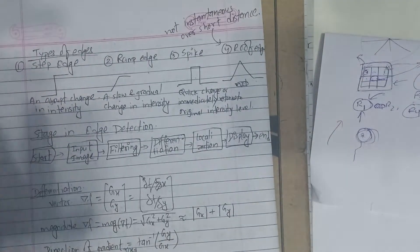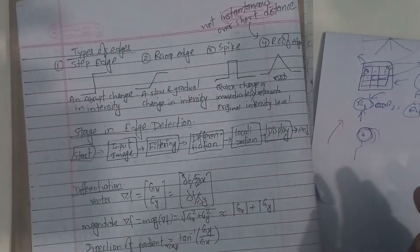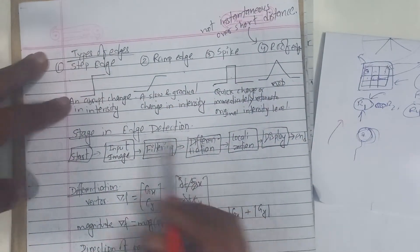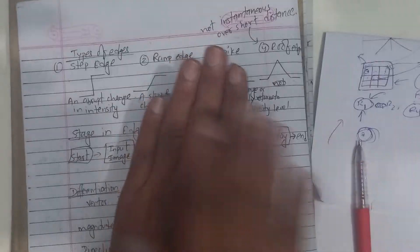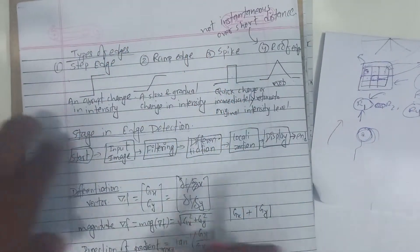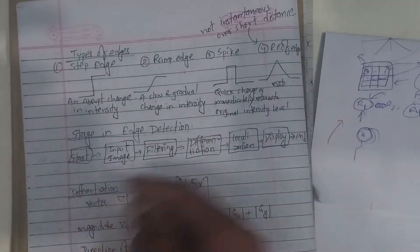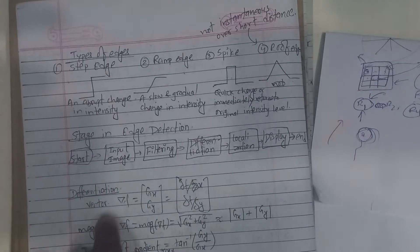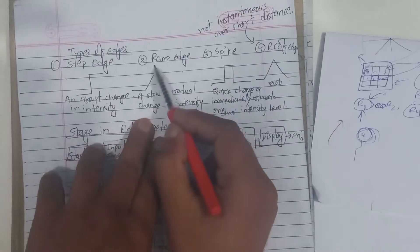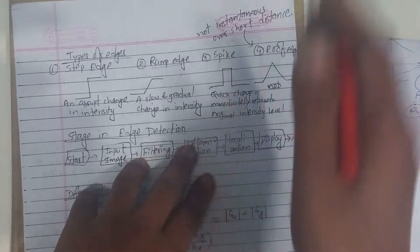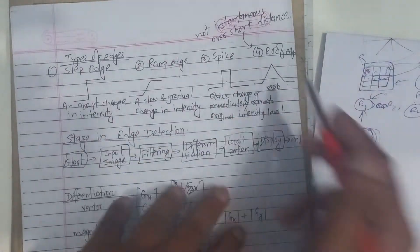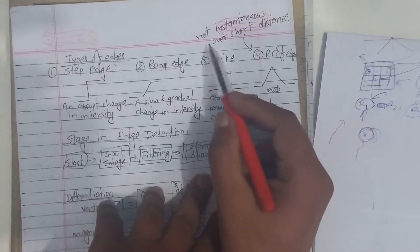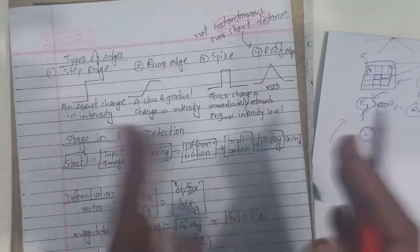We can use derivative vector and gradient differential vector. Types of edges include: step edge — an abrupt change in intensity; spike edge — a quick change or immediate return; and ramp or roof edge — a change not instantaneous but over a short distance.